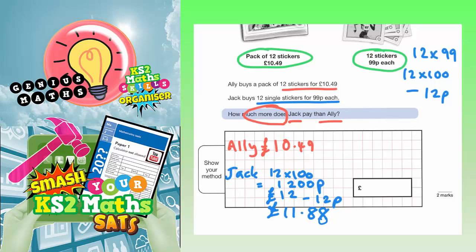So what we need to do finally is work out the difference between £10.49 and £11.88. Let's work that out now. So £11.88. Notice I'm setting it up in a column method. Subtract £10.49. Let's have a look at what we get.